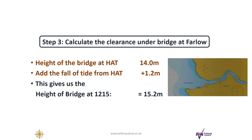Step three: we calculate the clearance under the bridge at Farlow. We know the height of the bridge at HAT will be 14 meters. We can now add the fall of tide from HAT, which is an additional 1.2 meters clearance. So this gives us the height of bridge at 1215 of 15.2 meters.